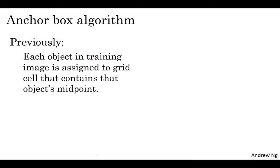So to summarize, previously, before you were using anchor boxes, you did the following: for each object in the training set image, it was assigned to the grid cell that corresponds to that object's midpoint. And so the outputs Y was three by three by eight, because you have the three by three grid, and for each grid position we had that output vector, which is PC, then the bounding box, then C1, C2, C3.